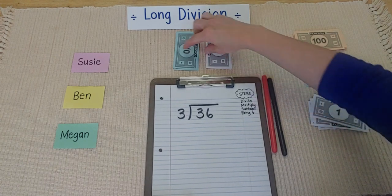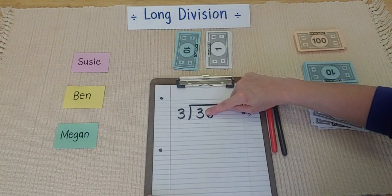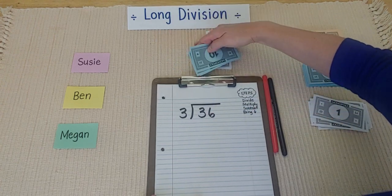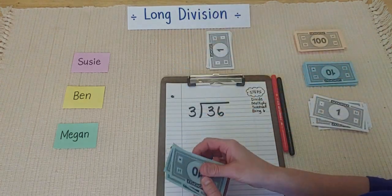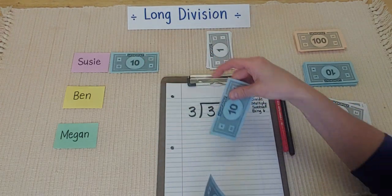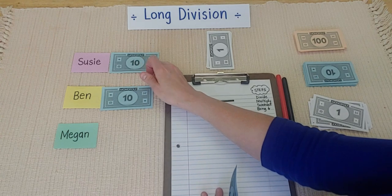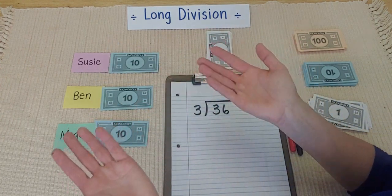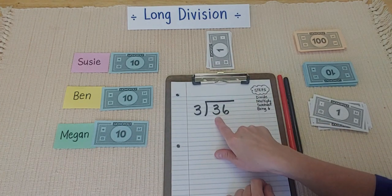Okay. Let's get started. I'm going to divide. And I'm going to start with my biggest place value, which is the 30. My 3 tens. Oh, I hope everyone can get their fair share. Let's see what's going to happen. All right. Susie gets 10. Ben gets 10. And Megan gets 10. And I'm out of 10s. So, I can stop sharing my 10s.